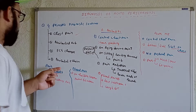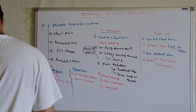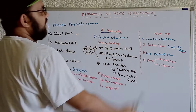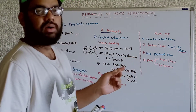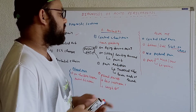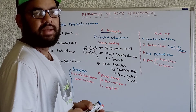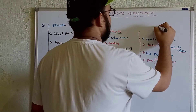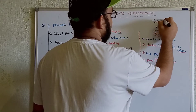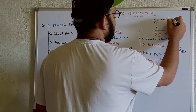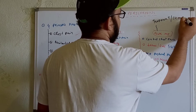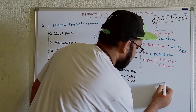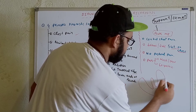Now let's discuss laboratory tests to differentiate acute pericarditis from acute MI. In acute MI, when myocardial cells undergo necrosis, the values of troponin T and CK-MB are significantly increased.